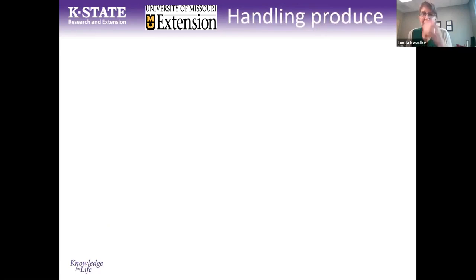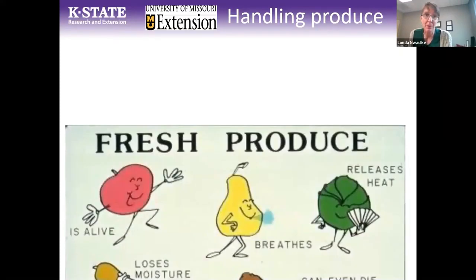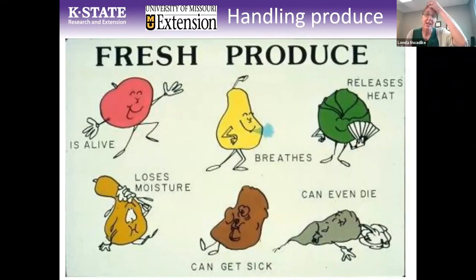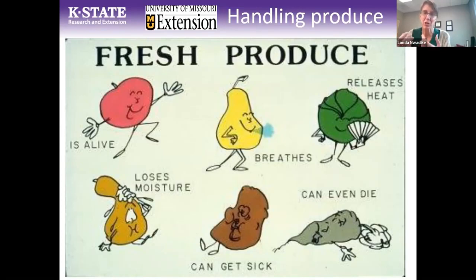I'm going to share some slides from a colleague who's a post-harvest physiologist. She works with produce growers to handle produce safely and extend shelf life — but these are also good things for consumers to think about. The first thing to mention is that fresh produce after it's harvested is still alive. It's still breathing, respiring, releasing heat, and can lose moisture really easily. So when I talk about these tips, we'll keep in mind the science behind why they help keep produce fresh, healthy, and safe longer.